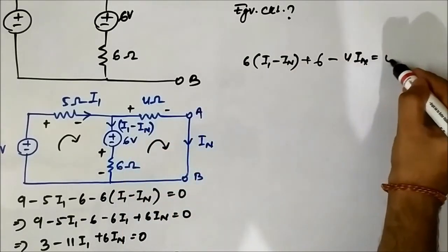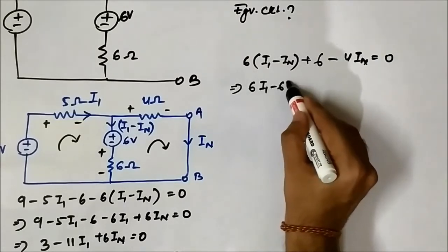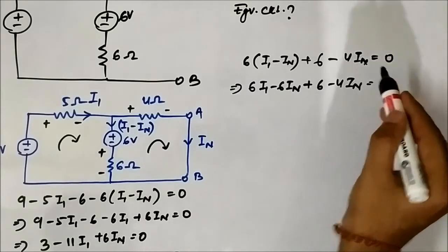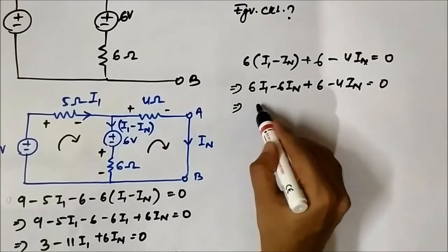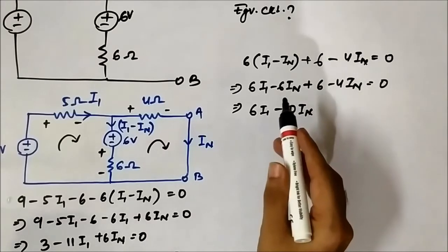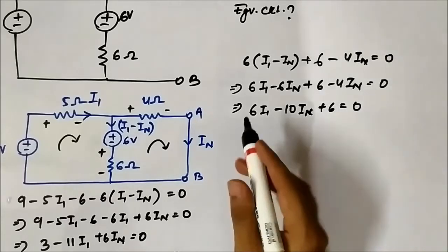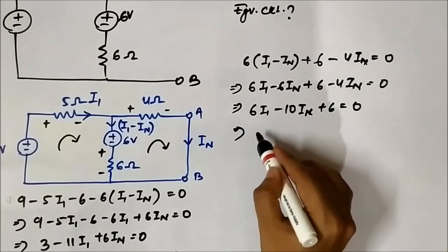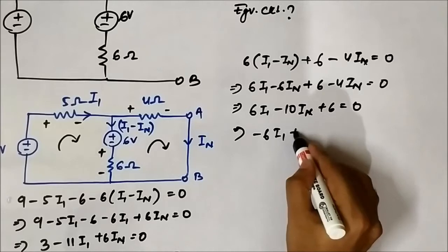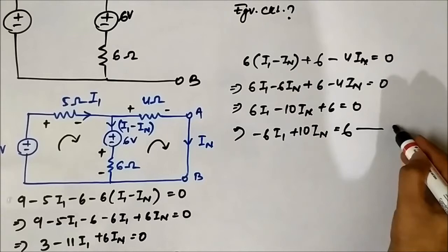That equals 0. That implies 6 I1 minus 6 In plus 6 minus 4 In is equal to 0. That implies 6 I1 minus 10 In plus 6 equals to 0, or we can write it as minus 6 I1 plus 10 In is equal to 6. This is equation number 2.